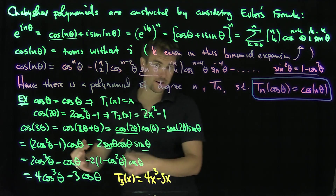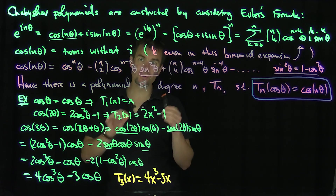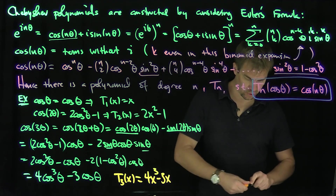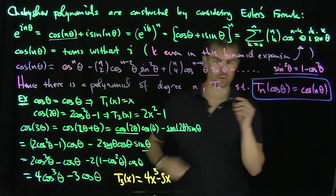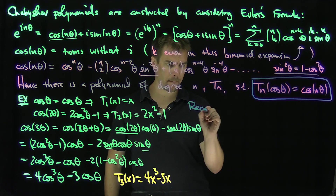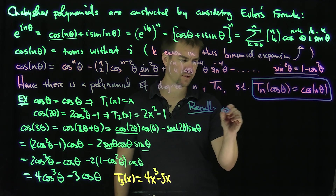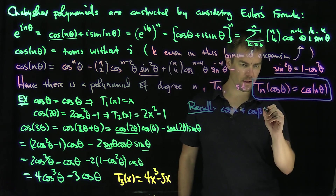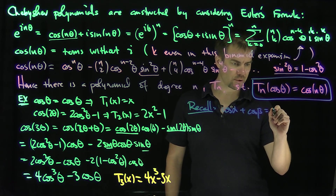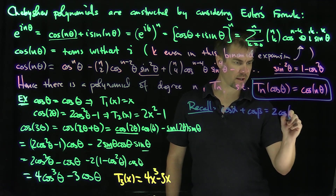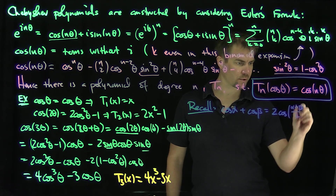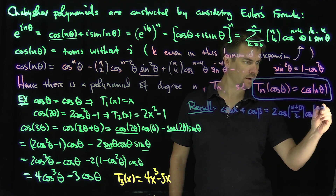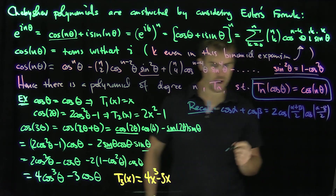Rather than computing trig identities each time, we can use a recursion formula. Recall the sum-to-product identity: cosine(alpha) + cosine(beta) = 2·cosine((alpha+beta)/2)·cosine((alpha-beta)/2).